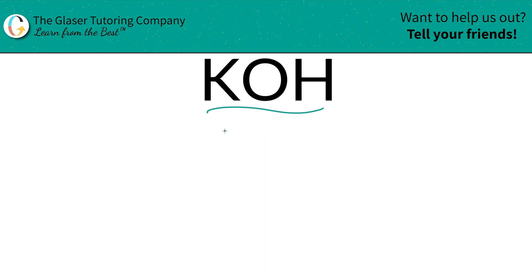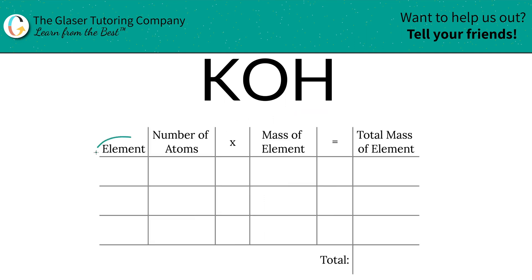I have a nice little table to help us out. Watch. Bam. So the first thing we're going to do is write the elements we see in the compound — so potassium, oxygen, and hydrogen.